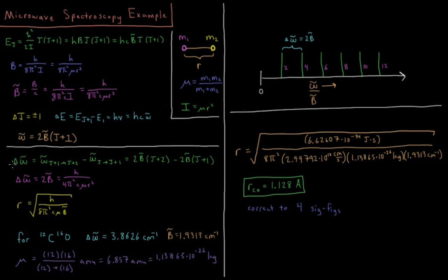We can also see that the difference in energy between any two subsequent peaks — there will be an absorption every 2B̄ — so J+1 goes 1, 2, 3, etc., times 2B̄. So ω̃/B̄ gives us a spectrum of evenly spaced lines at 2, 4, 6, 8, 10, 12 times B̄. The difference between any two peaks in the spectrum equals 2B̄.